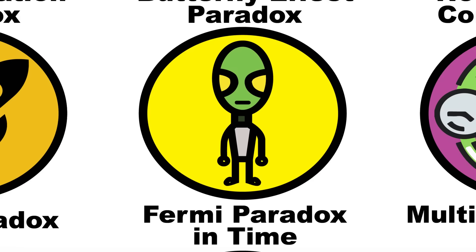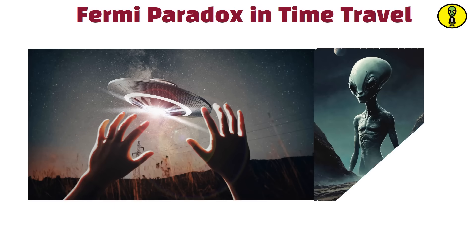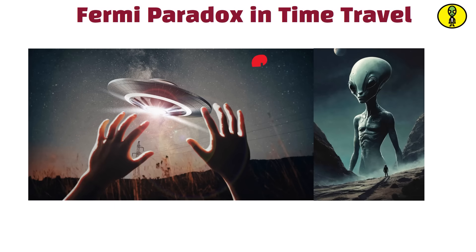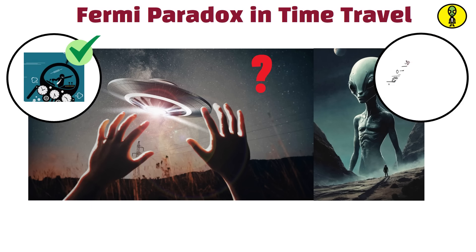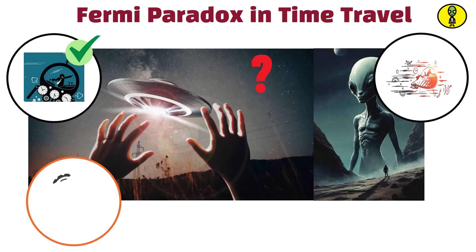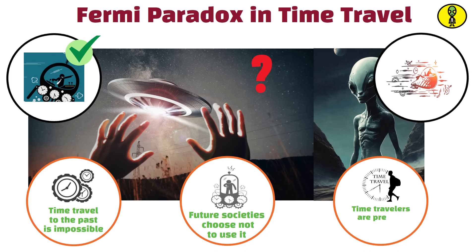The Fermi paradox in time travel, inspired by the original Fermi paradox about alien life, questions why, if time travel to the past is possible in the future, we don't see time travelers in our present. It suggests either that time travel to the past is impossible, that future societies choose not to use it, or that time travelers are present but undetected.